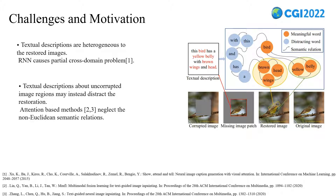Text-guided image inpainting faces two-fold challenges. First, it is difficult to utilize various textual guidance as additional supervision due to the fact that textual descriptions can be heterogeneous to the restored images, which leads to a partial cross-domain problem. For instance, a text sentence may describe only certain regions of an image while ignoring other parts. Second, textual descriptions about uncorrupted image regions may instead distract the restoration when we take them as guidance. In this picture, the red words of textual descriptions are meaningful for restoration, while the other words are distracting.